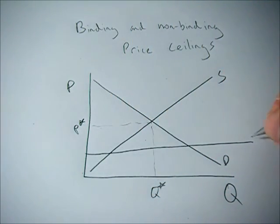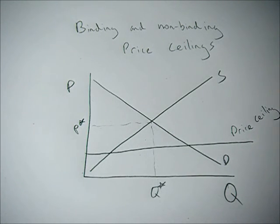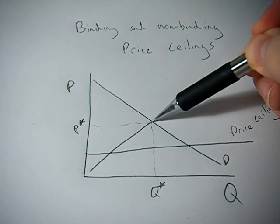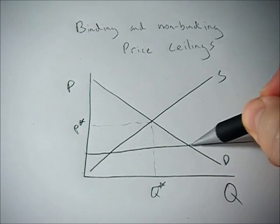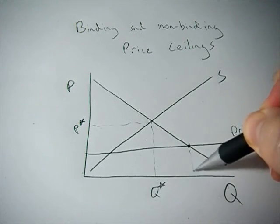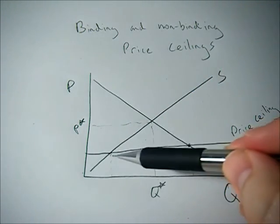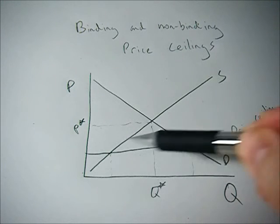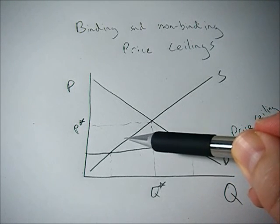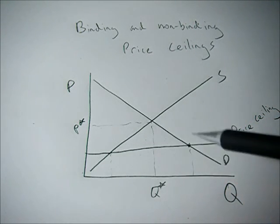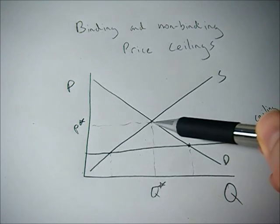So if the price ceiling is below the market equilibrium price, then what happens is this is the quantity the consumers demand, this is the quantity that's supplied, and generally there would be a shortage so the price would go up, suppliers would supply more, consumers would demand less, we'd get to equilibrium.